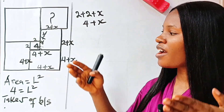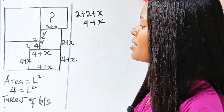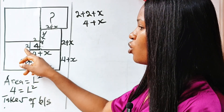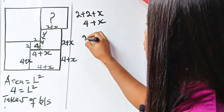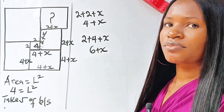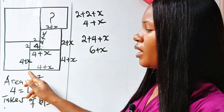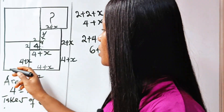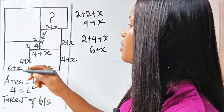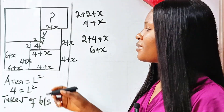Notice that we've now encroached into another square. The whole of this new length is 2 + (4 + x). Adding those: 2 + 4 + x = 6 + x. So from here to here is 6 + x, this side is 6 + x, this side is 6 + x, and this side is also 6 + x.